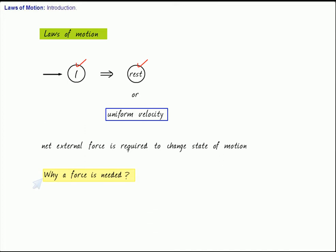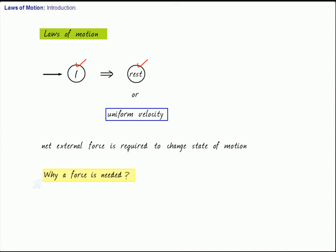The second law of motion is going to tell us how much force will be required. The first law tells us why force is required; the second law quantifies the force — it tells us how much force is required. And the third law of motion tells us a typical property of the force.